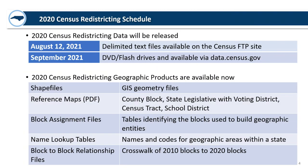The Census Bureau had an announcement last week that the census release had actually been moved up. Originally they were planning on releasing the 2020 redistricting data on August 16th; however, it is now going to be released tomorrow, August 12th, at 1 o'clock PM. This is going to be the first time you will see 2020 census data for anything smaller than the state. The apportionment data was released in April and that was just total state populations. But this will be more detailed population data all the way down to the census block level — your first chance to see county, municipal, and community population counts.